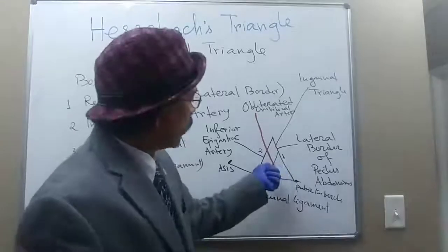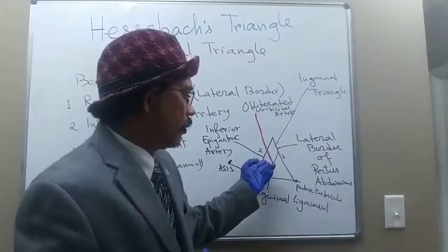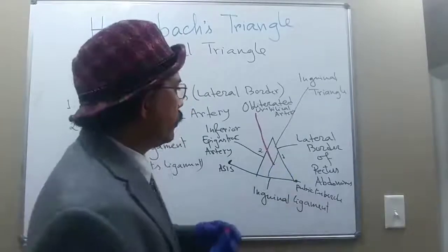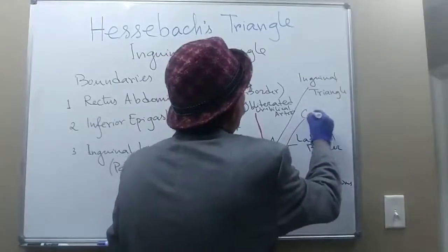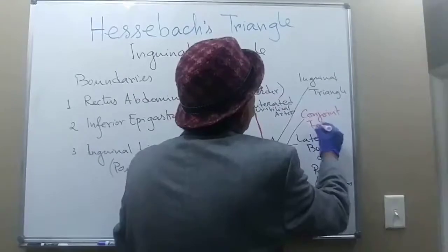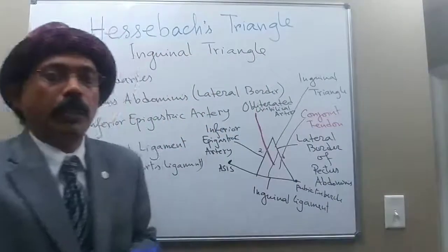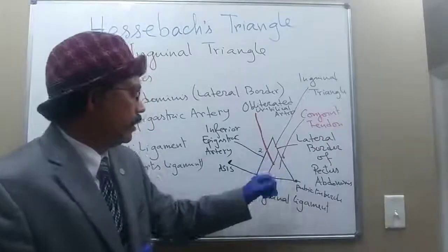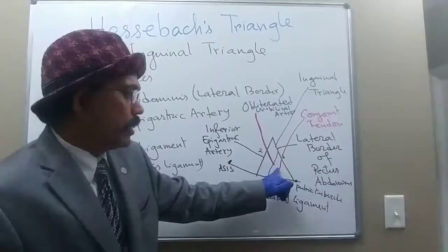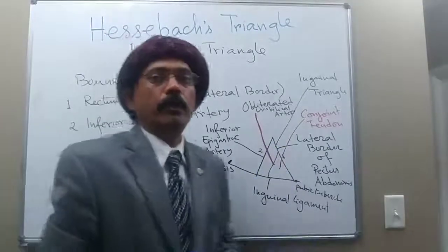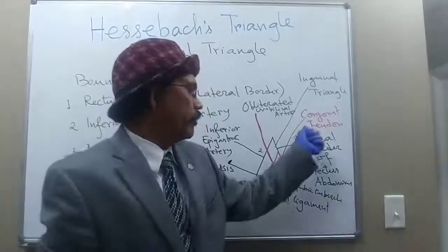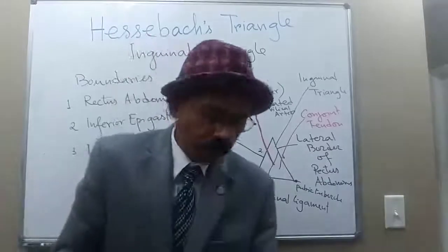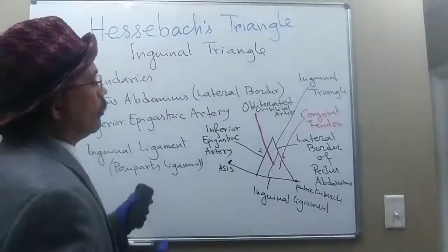Direct inguinal hernia may arise from the lateral part because this part is weak — it is covered only by the fascia transversalis. The medial part is covered by fascia transversalis and is reinforced by the conjoined tendon, which is the united tendon of the internal oblique and transversus abdominis, making it stronger. However, hernia is still possible from the medial side if the muscles are weakened due to surgery or trauma and the conjoined tendon cannot provide adequate support.